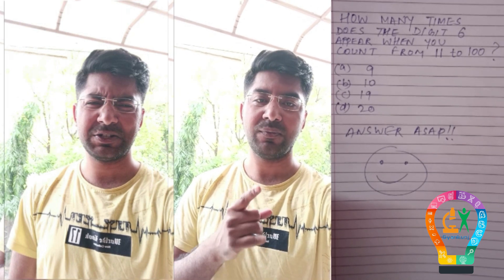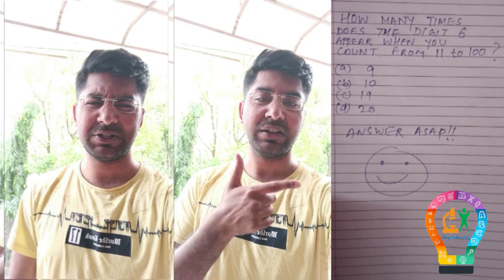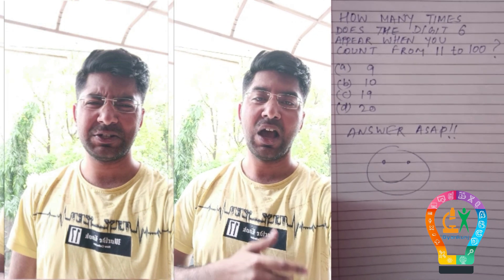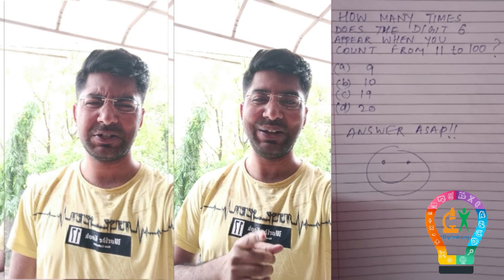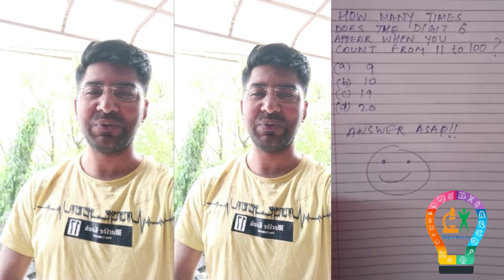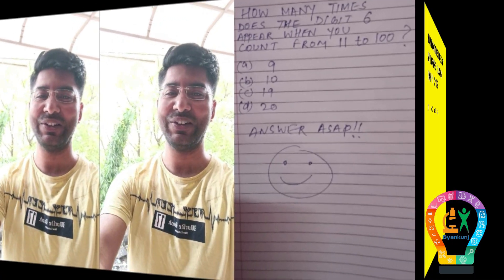We are posting a question which is based on number system on the right side of the screen. The question is: how many times does the digit six appear when you count from 11 to 100? Answer this question as soon as possible — we are waiting for you.